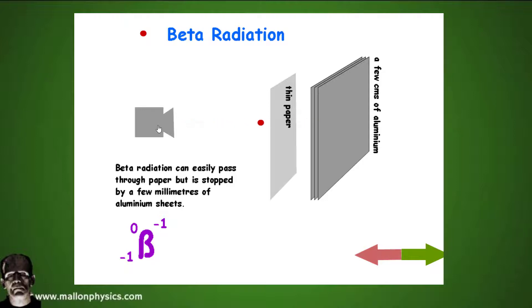Beta radiation is really a fast moving electron with a charge of minus one, but it's very very light indeed. It's usually stopped on its journey by bumping into other atoms.